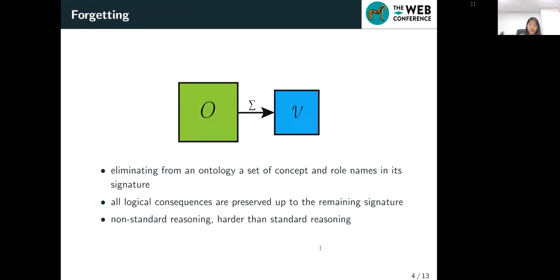So what is forgetting? In simple terms, forgetting is a form of reasoning concerned with eliminating from an ontology O a set of concepts and role names in its signature, namely the forgetting signature, in such a way that all logical consequences are preserved up to the remaining signature. In this case, the forgetting signature is the signature of O minus sigma.